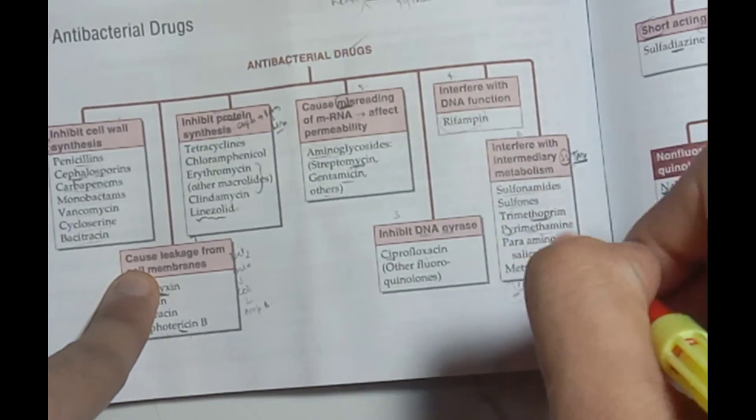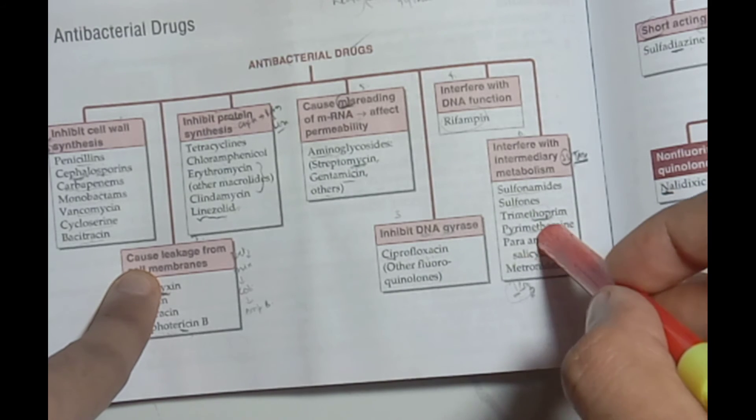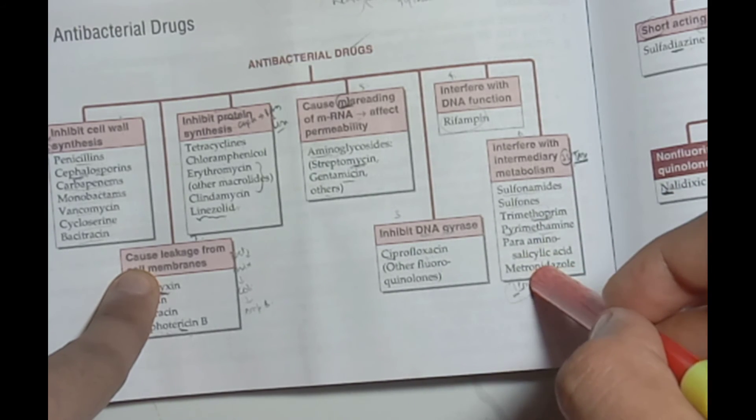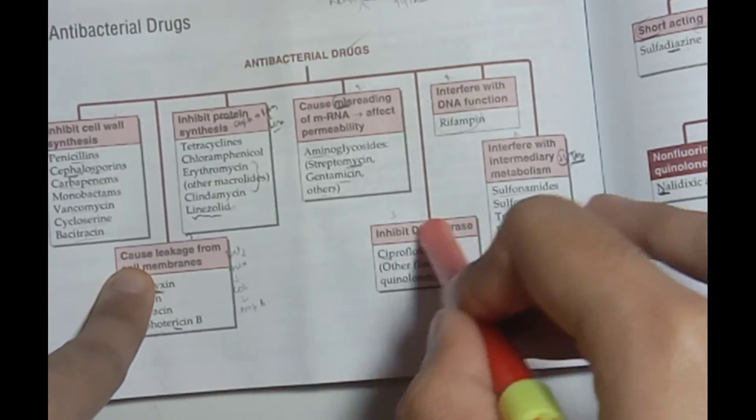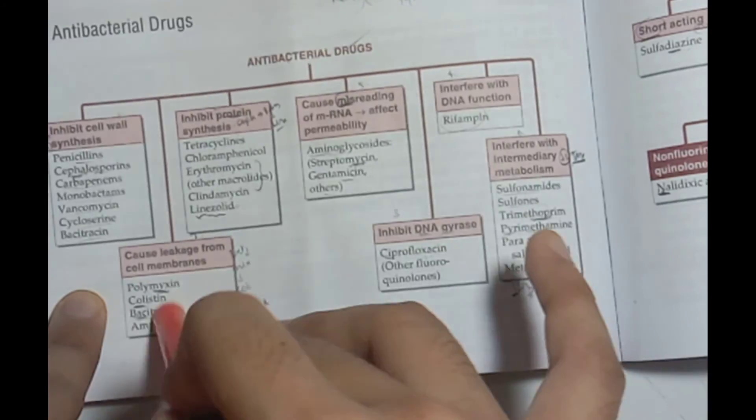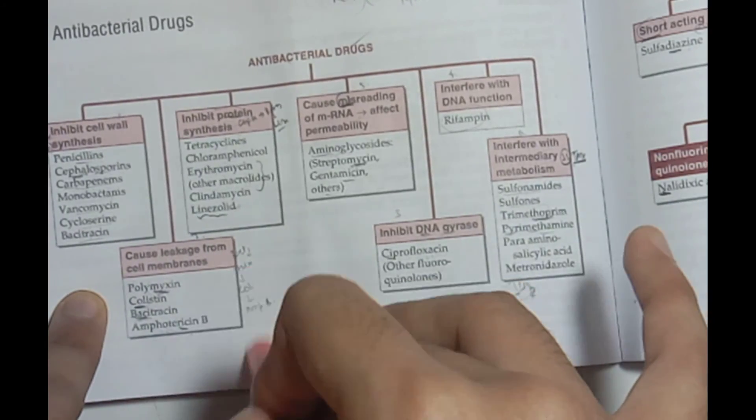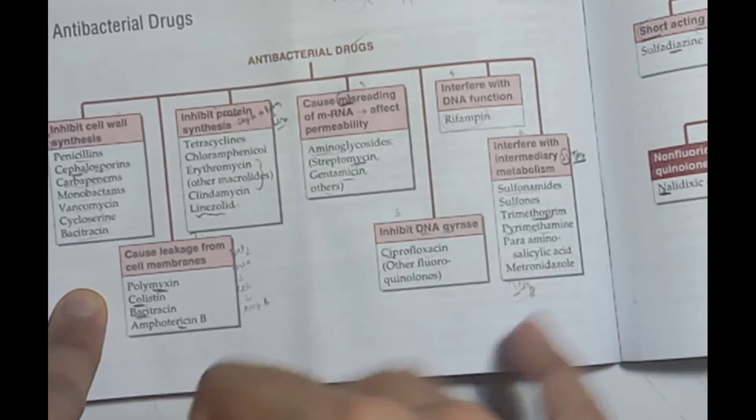Intermediary metabolism is STMP: Sulfonamides and Sulphones, Trimethoprim. The engine is going to be Pyrimethamine, Metronidazole, Pyrimethamine, and Para-aminosalicylic acid. If DNA gyrase, it will be Ciprofloxacin and other fluoroquinolones. Leakage from cell membrane: Bacitracin, Polymixin, Colistin, and Amphotericin B.